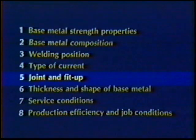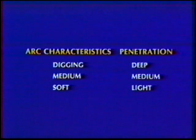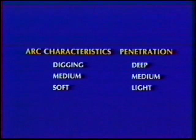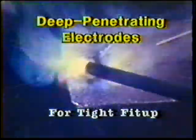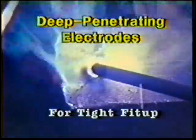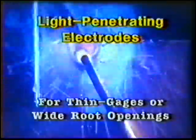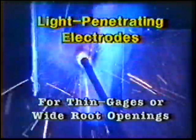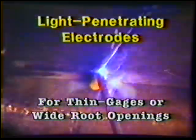Point five: joint design and fit-up. Welding electrodes are designed with a digging, medium, or soft arc for deep, medium, or light penetration. The last digit of the electrode classification also indicates this factor. Deep penetrating electrodes with a digging arc should be used when the joint fit-up is tight. At the other extreme, light penetrating electrodes with a soft arc are required when welding thin materials or when the root openings are too wide.